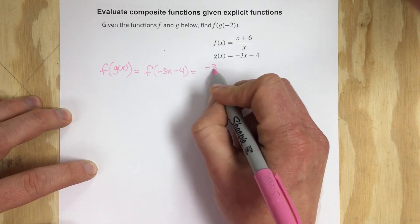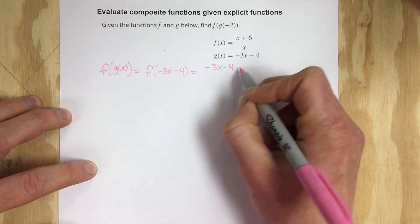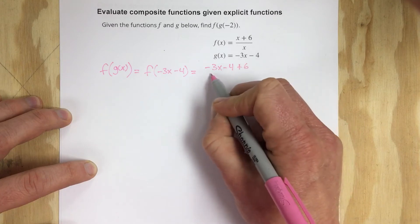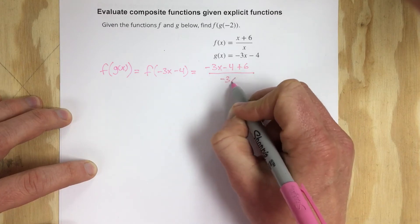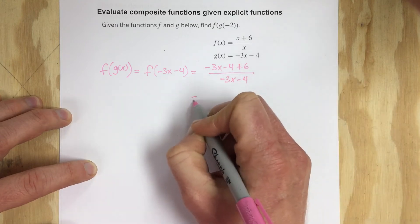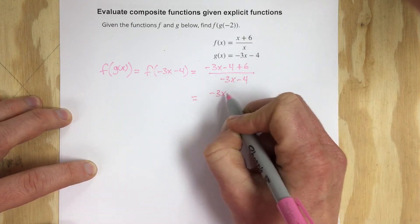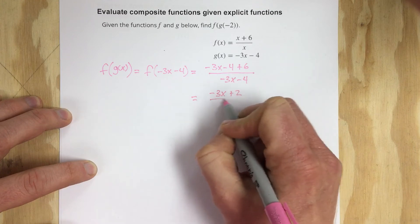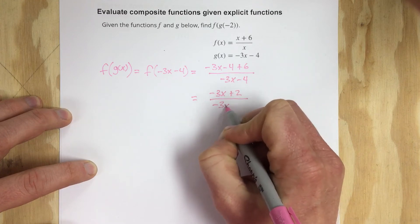So I get negative 3x minus 4 plus 6 on top over negative 3x minus 4. So I end up with negative 3x plus 2 over negative 3x minus 4.